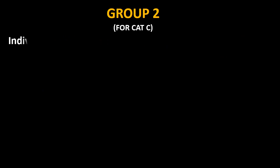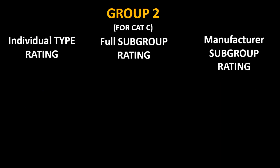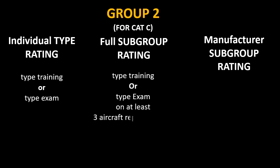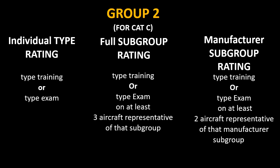For category C and aircraft falling in Group 2, you can have individual type rating, full subgroup rating, or manufacturer subgroup rating. For individual type rating you will need only type training or type exam. For full subgroup rating you need type training or type exam on at least three aircraft representative of that subgroup. For manufacturer subgroup rating you need type training or type exam on at least two aircraft representative of that manufacturer subgroup.